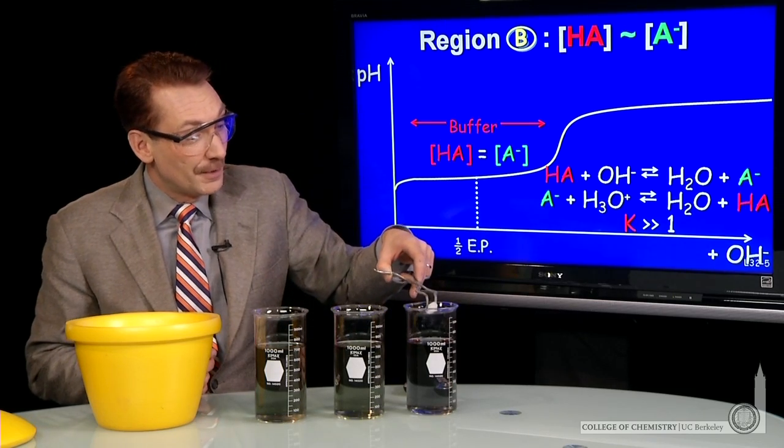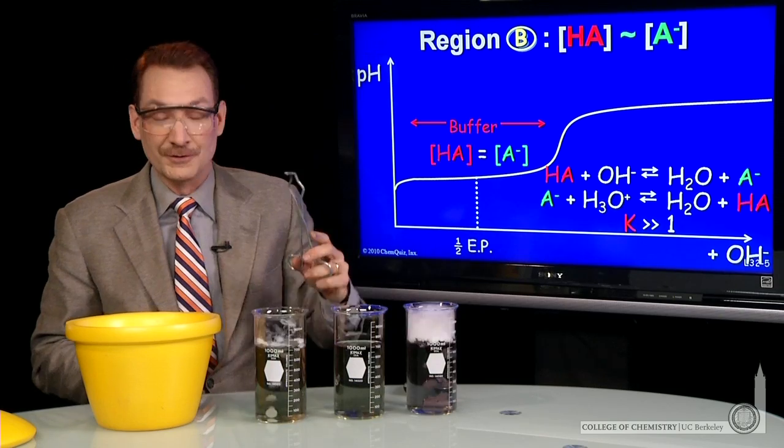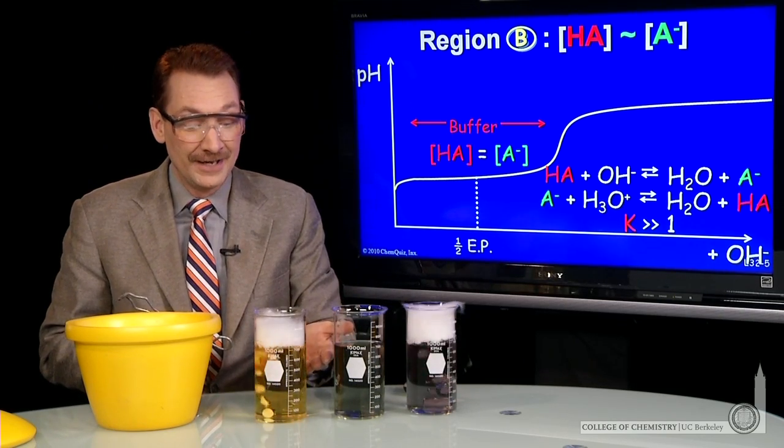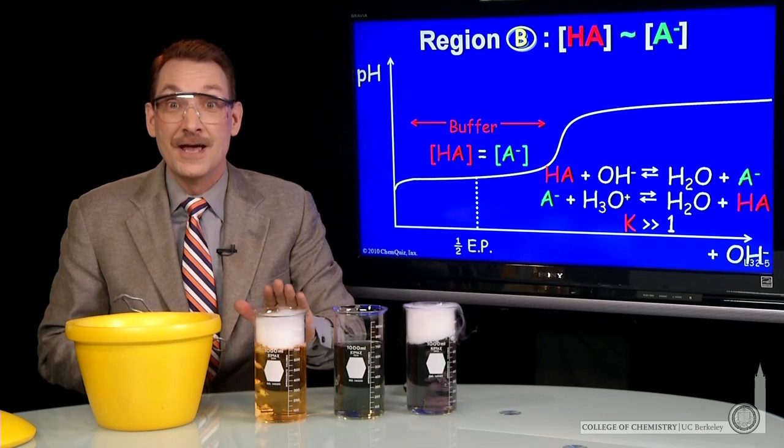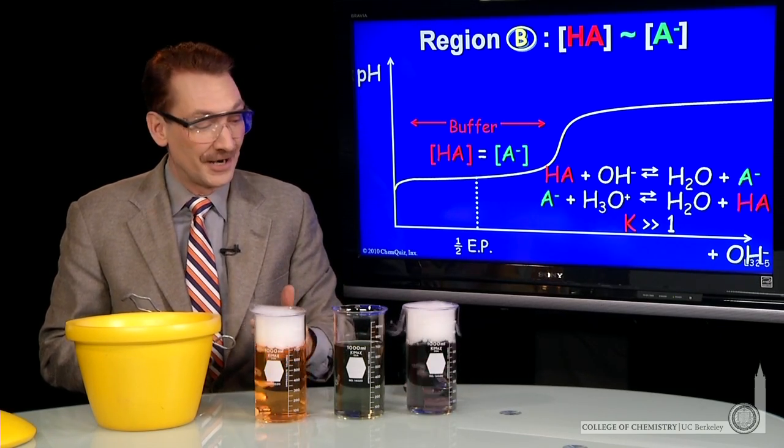I'll acidify the solutions, and let's watch how fast the pH changes. Here to the buffered solution, and here to the unbuffered solution. Now watch. As the solutions are acidified, the unbuffered solution's pH changes rapidly. You can see that by the color change in the indicator.